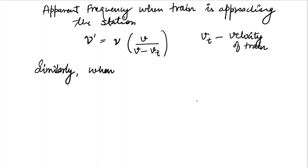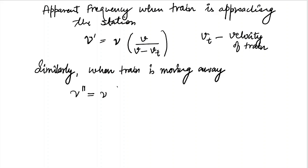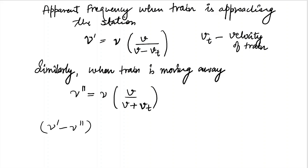Similarly, another case: when the train is moving away, the apparent frequency mu double-prime has a plus sign in the denominator, because the train is moving away so the velocity gets added. These are the two formulas we should know before solving. We are given the difference in the apparent frequencies of the two cases, which is 350 Hz — this is the frequency drop — and we have to find the actual frequency of the whistle.